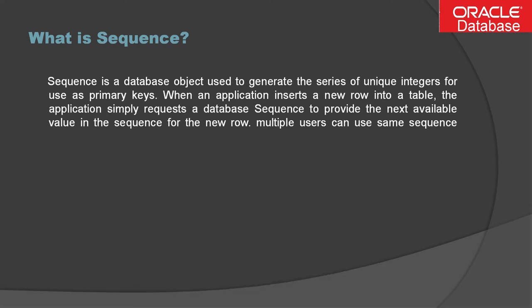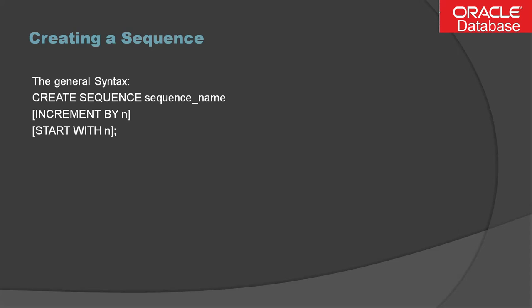So from the definition, a sequence is a database object which helps us to create unique integers in sequential order, so that we can use that sequence-generated number as a primary key in our table. Once you create the sequence, it can be used by multiple users — that's the advantage.